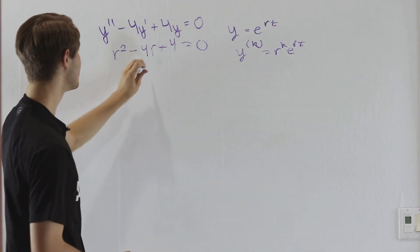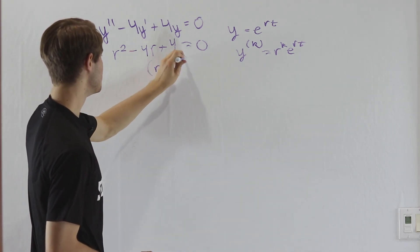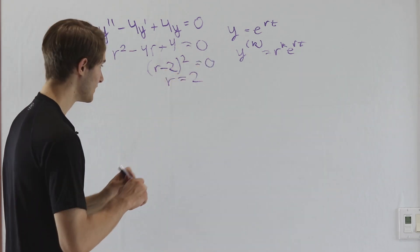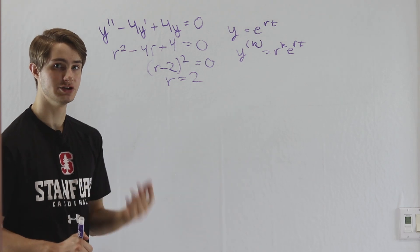If we want to factor this to solve for r, we know that we'll get r minus 2 squared equals zero, which gives us the solution r equals 2. And this 2 is going to be a double root.